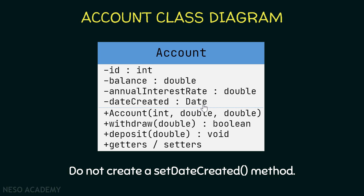The dateCreated attribute is of type Date. Inside Java we have a Date class used to create Date objects, which contain information about the date and time. Now the constructor takes three parameters: one integer and two doubles - the integer is the id, the first double is the balance, and the second double is the annualInterestRate.